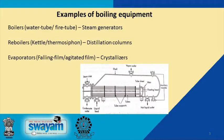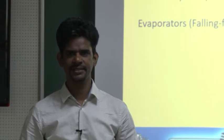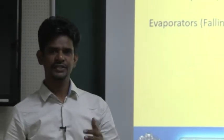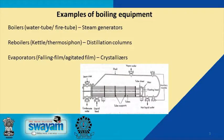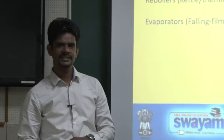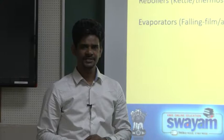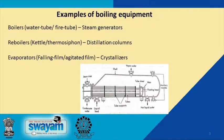In chemical process industries, boiling is an important operation carried out in various processes. For example, in the generation of steam from water we use boilers — water tube boilers and fire tube boilers. In a distillation column at the bottom we have kettle type or thermosyphon boilers where we heat a multi-component liquid, vaporize it, and send it through the column. In evaporators we boil off the solvent to crystallize a product using falling film or agitated film evaporators.